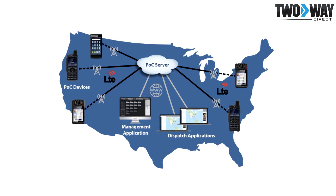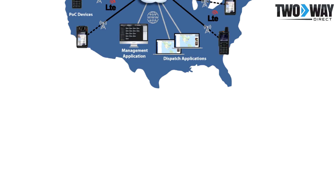Users are able to receive instant connectivity with others who are also connected through Wi-Fi, 3G, or 4G. Along with the ability to communicate instantly nationwide, another benefit of POC communications is the ease of adding onto a system without the need to expand infrastructure, as would be required in a traditional two-way radio system.